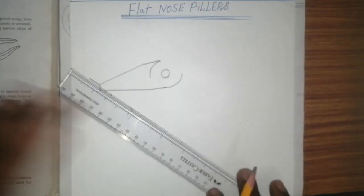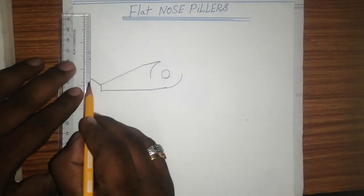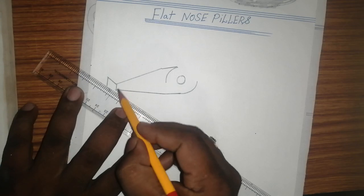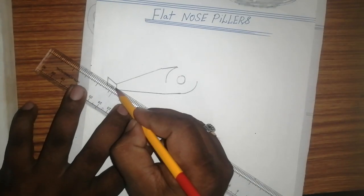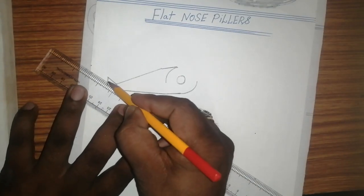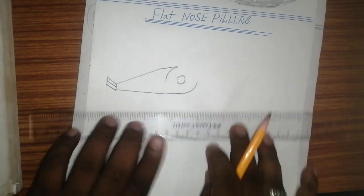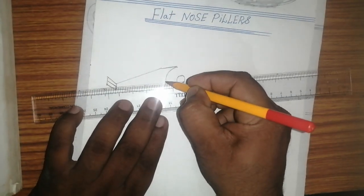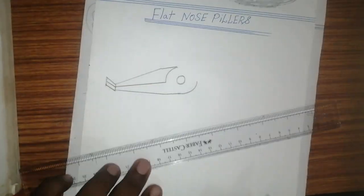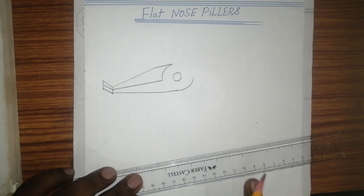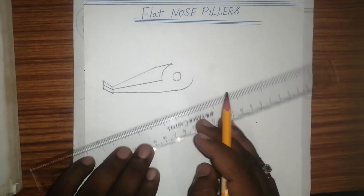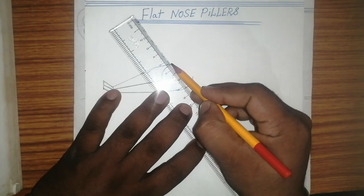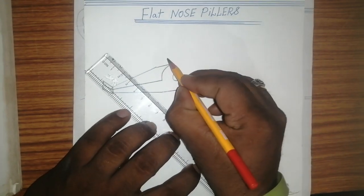Join this line, and after that join this line again. Take like a rectangle box and join here. After this, in the middle line, join this line.